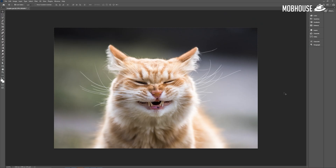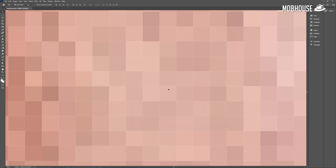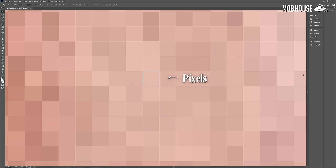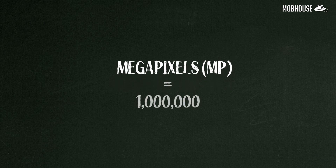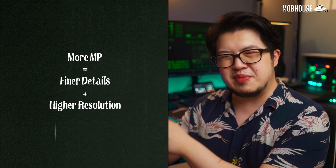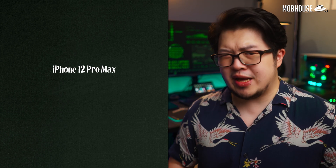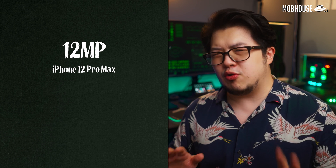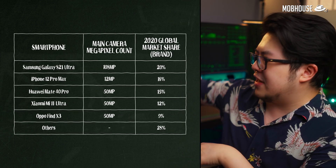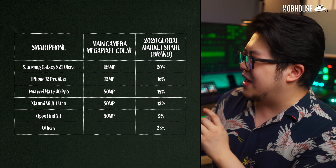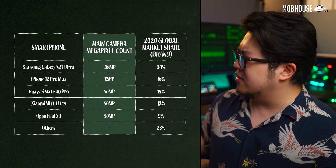Firstly, let's address the elephant in the room: megapixels. If you zoom all the way into an image, you'll see that it's made out of an array of tiny elements called pixels. The mega prefix denotes a million, so megapixels refers to a million picture elements. Instinctively, we would think that a camera with more megapixels captures images with finer details and higher resolution — better image quality, right? But why does the camera on an iPhone 12 Pro Max with only 12 megapixels still hold its own against the 108 megapixel beast on the Samsung Galaxy S21 Ultra? In fact, looking at flagship phones currently out there, the megapixel count on their main camera actually ranges quite a bit.